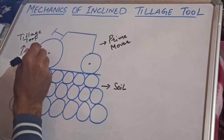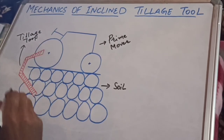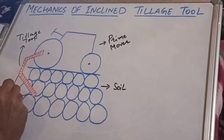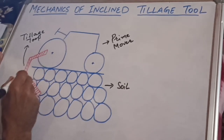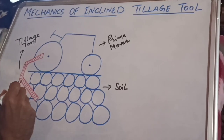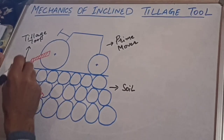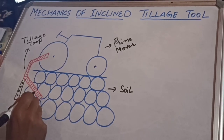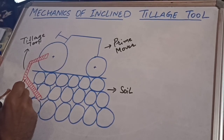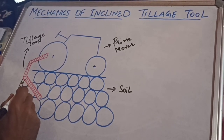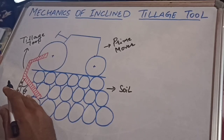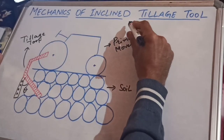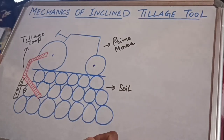This tillage tool is usually attached by means of a three-point linkage system of a tractor. If this tillage tool is placed in a vertical direction, it is known as a vertical tillage tool. But here this tillage tool is inclined at some angle, suppose theta. So it is placed in an inclined direction, and that is known as an inclined tillage tool, which is today's topic.